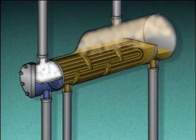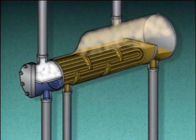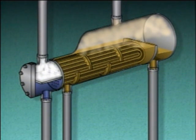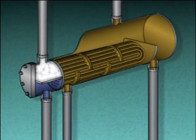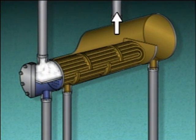On the other hand, a level that is too high can be a problem too. For example, if the level in a kettle type reboiler gets too high, the vapor and liquid will not separate properly and the mixture may flow back into the distillation column.